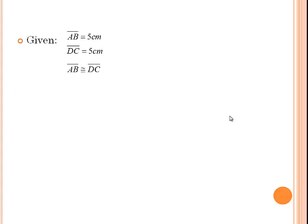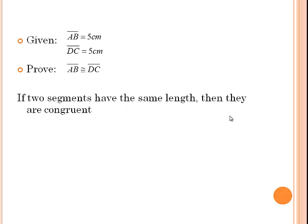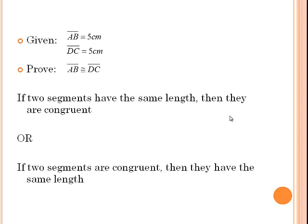Let's take a look at the next example. Here we are given that segment AB has a length of 5 centimeters and segment DC has a length of 5 centimeters, and we want to prove that segment AB is congruent to segment DC. We can use the same language for the length of segments as we did for angles. So we have two possibilities: if two segments have the same length, then they are congruent — or — if two segments are congruent, then they have the same length.